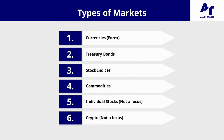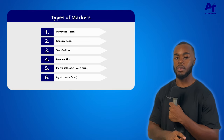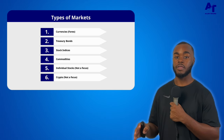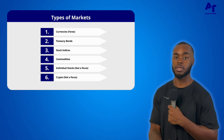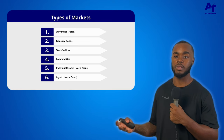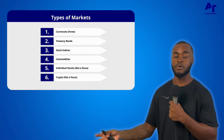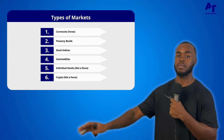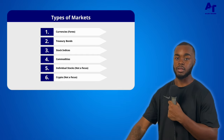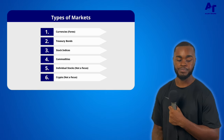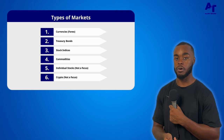First we have currencies, which you may have heard of as forex. Then we have treasury bonds. Third, stock indices. Fourth, commodities. Fifth, individual stocks. And sixth, crypto. Individual stocks and crypto won't be the main focus of this course — I've heard the ICT concepts I'm teaching work in those markets, but I don't personally have experience in them.